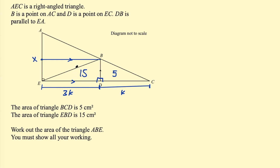These two triangles are exactly the same — all angles and lengths are the same — so the area of EXB is also 15. Now I'm looking for the area of triangle AXB. This right triangle is going to be similar to triangle BDC, because all the angles are the same. These two angles are the same because those lines are parallel — so those two triangles are similar.